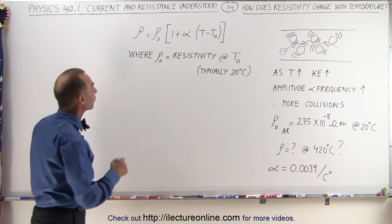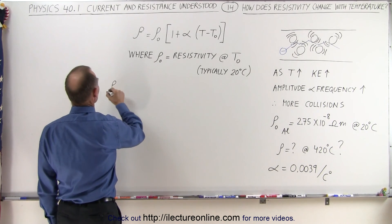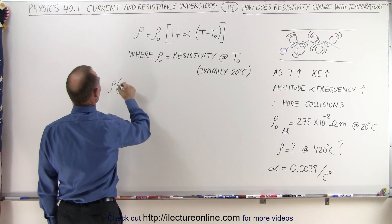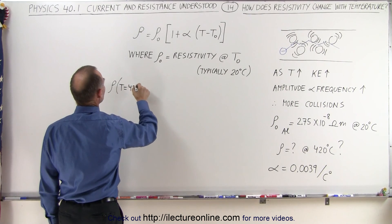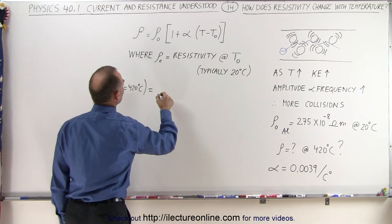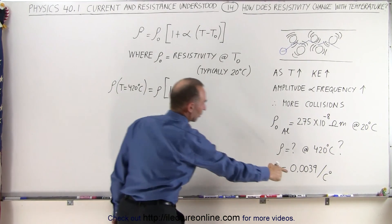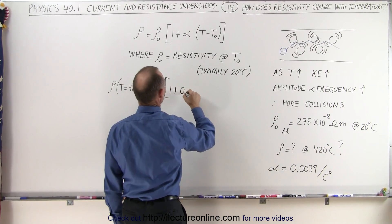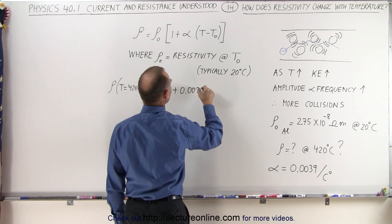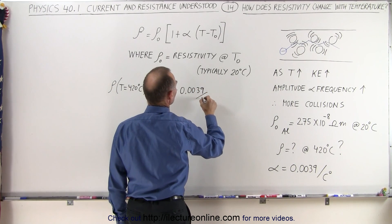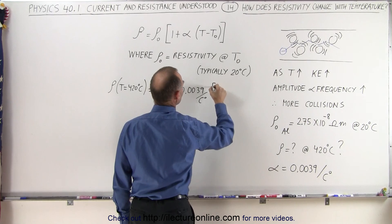All right, let's go ahead and plug that in now and see what we get. So the resistivity at a temperature equal to 420 degrees centigrade, which is 0.0039 per centigrade degree, times...